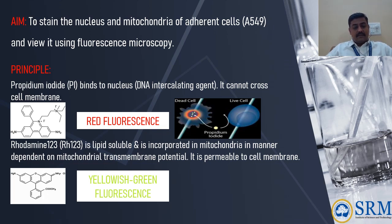Propidium iodide, the first fluorescent dye you are going to use in this experiment, binds to the nucleus as it is a DNA intercalating agent. However, it cannot cross the cell membrane, so it can actually stain only the dead cells and not the live cells. It appears red in color when visualized under the microscope.